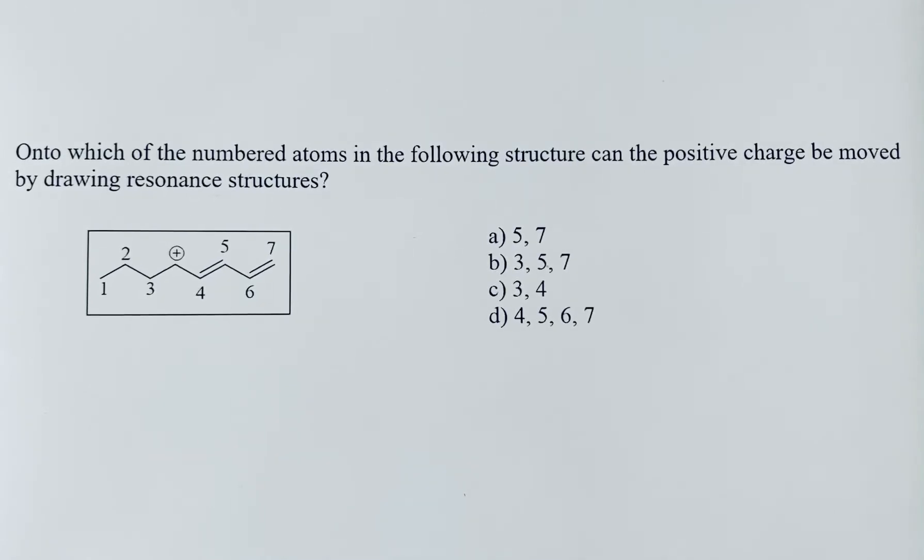Onto which of the numbered atoms in the following structure can the positive charge be moved by drawing resonance structures? To approach this problem, the best way to solve it would be to draw those resonance structures.